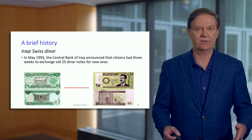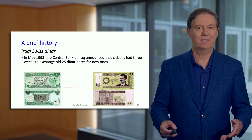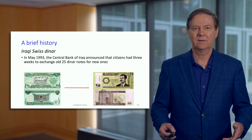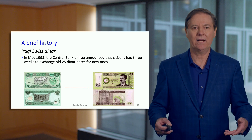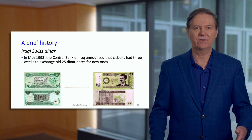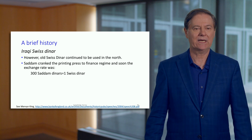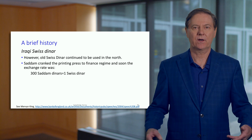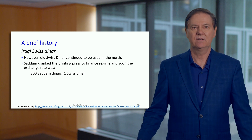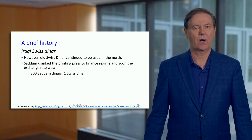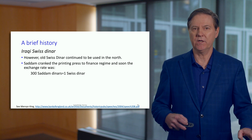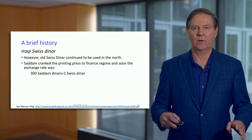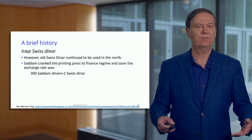Some people in the south did this exchange, but this didn't apply to the north. The north was basically separate — there was no central bank of Iraq with any influence there. So the Kurds in the north just decided to continue using the Iraqi Swiss dinar. To be clear, that dinar had no value according to the central bank of Iraq, but it was used as if it did have value.